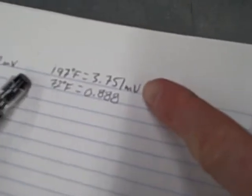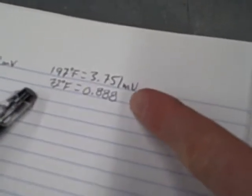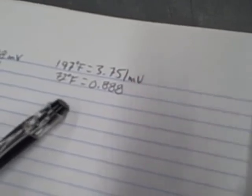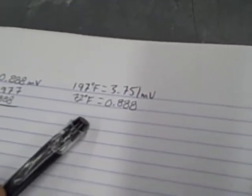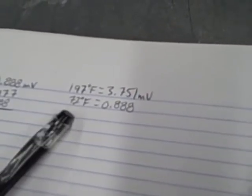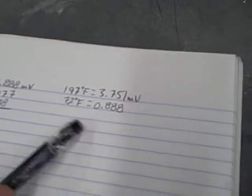So that's your millivoltage for 197. Yep, and then 72 degrees ambient temp. Okay, and why do you have to include that factor there? To compensate for the millivoltage that that 72 degrees is going to make. Okay, all right.